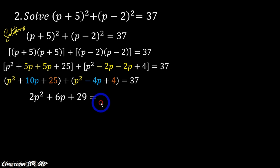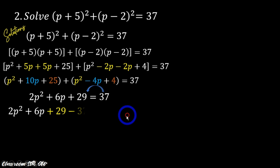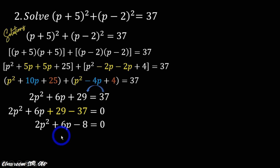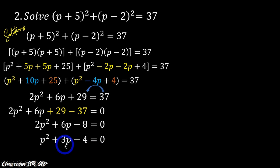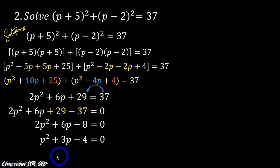So we have 2p squared plus 6p, and combining the constants 29 and negative 37 gives us 2p squared plus 6p minus 8 equals zero. Now since 2 is common in each term, we multiply both sides by one-half. This gives us p squared plus 3p minus 4 equals zero, because 6 divided by 2 is 3 and negative 8 divided by 2 is negative 4.